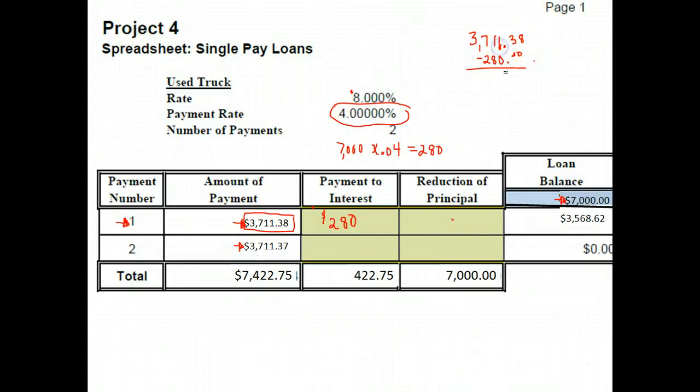So 280 was taken out for interest and didn't make a difference in our balance. The amount that's left to actually pay down our loan is $3,431.38. So that's the number I put right here. Now, they put the balance of the loan here, which should be accurate. It should be $7,000 minus the amount we put here. It should give us our number here.